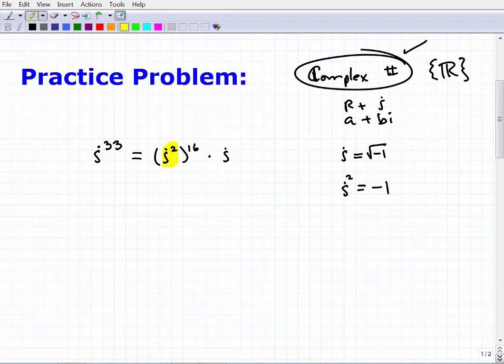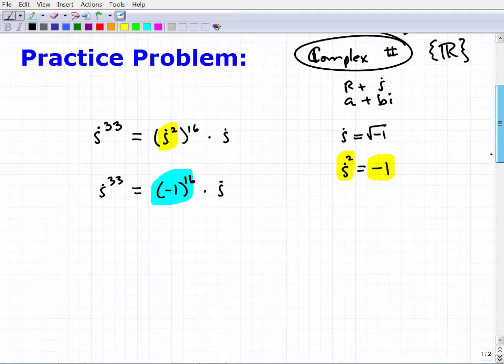So i squared here, we already see that i squared is equal to negative one. So I can say, okay, i to the 33rd power is equal to negative one to the 16th power times i. Okay, so now what we have to do is figure out what this is, negative one to the 16th power. So how do we do that? Okay, that should be pretty intuitive just by patterns.